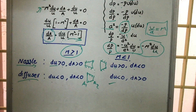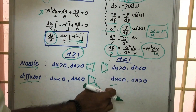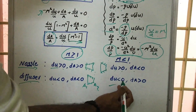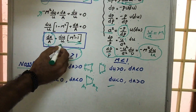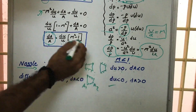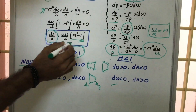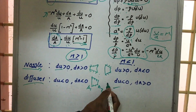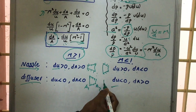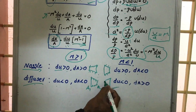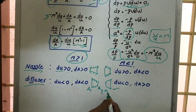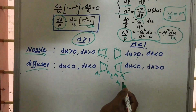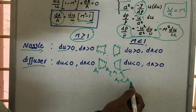Similarly, for a subsonic diffuser, du is less than zero and M is less than 1, so M²−1 is negative. A negative times a negative gives a positive, so dA must be positive — meaning the area is increasing. Here A1 is less than A2, giving the subsonic diffuser a diverging shape.